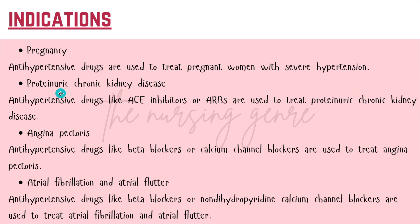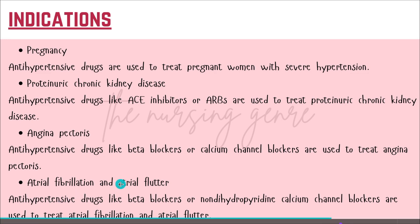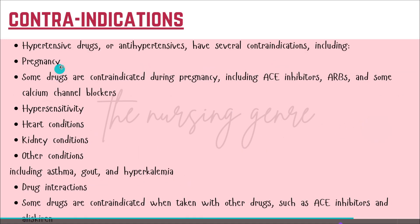ACE inhibitors are used to treat proteinuria and chronic kidney disease. Protein in urine — such as albumin and globulin — indicates kidney involvement. In chronic kidney disease, both renin-angiotensin inhibitors and ACE inhibitors are used. Additional indications include angina pectoris, atrial fibrillation, and atrial flutter.